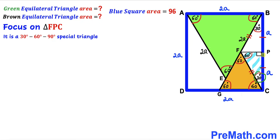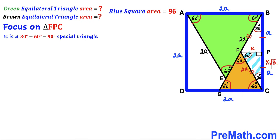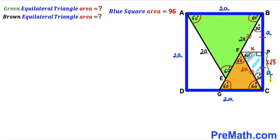In this 30-60-90 triangle, 30 degrees is the smallest angle and 90 degrees gives the hypotenuse as the longest side. In a 30-60-90 special triangle, the hypotenuse is always twice the smallest leg: if the smallest leg is 1, the longest side is 2, and the third leg is √3. In general, if the smallest leg is x, then the hypotenuse is 2x and the third leg is x√3. We can observe that side CP has length x√3, and CP is also equal to lowercase a.